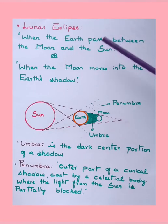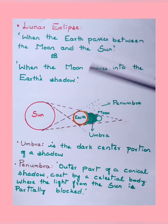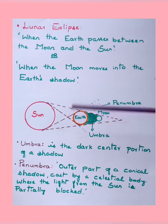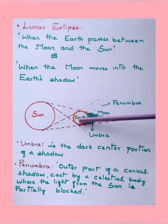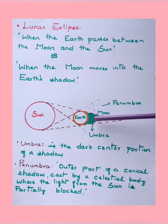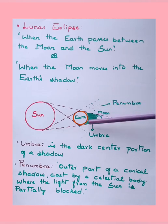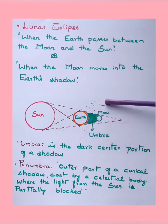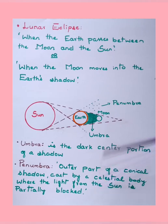Lunar eclipse occurs when the earth passes between the moon and the sun, or when the moon moves into the earth's shadow. The sun's light falls on the moon but part of the earth's shadow covers the moon, making part or all of the moon not visible from earth. The dark center portion is called umbra; the outer part of the conical shadow where light from the sun is partially blocked is called penumbra.